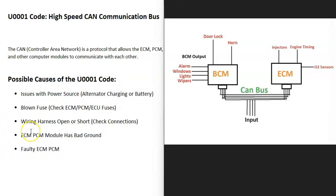Basically, there could be multiple computer modules inside of a vehicle — a transmission control module, an ABS control module, an engine control module, a body control module, and so on. All these computer control modules need to communicate mainly back to the main computer, called the ECM or PCM. To do this, they have what's called the CAN bus, or controller area network bus, which is basically all the wires running between all the control modules and the interface at each control module.